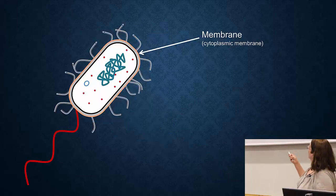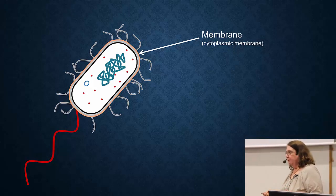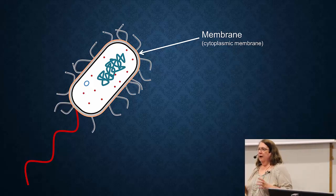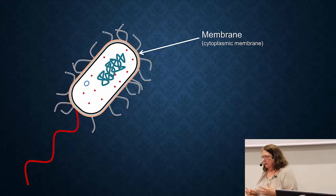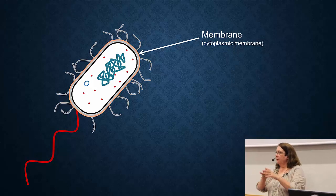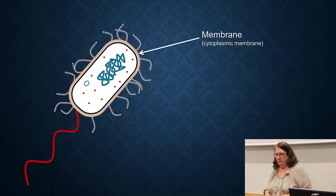The first thing I want to point out is the membrane, also called the cytoplasmic membrane. The membrane is what keeps a bacteria or any cell separate from the rest of the world. All of your cells are surrounded by membranes, and they're needed to basically keep their guts inside. You can think of them as a balloon or something around the cell. I'm going to spend quite a bit of time talking about the membrane, because it becomes very important with antibiotic resistance.